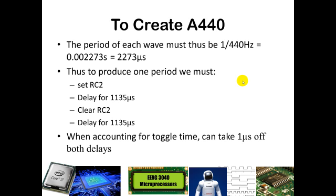So let's do a little bit of math. If you want to oscillate 440 times per second, then each period has to be 1 over 440 hertz, which works out to be 2,273 microseconds. And so if we want one period, which is going to be setting, delaying, clearing, and delaying for the same amount of time to take 2,273 microseconds.